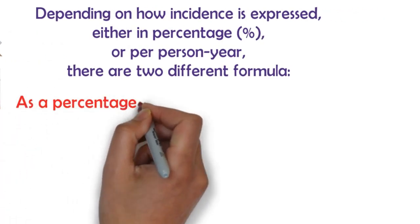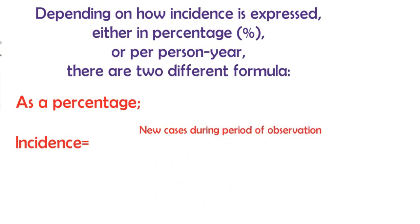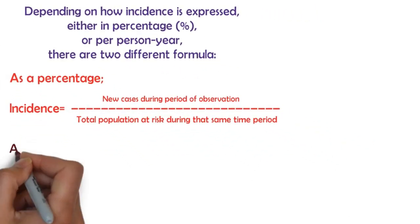To express incidence as a percentage: Incidence equals new cases during period of observation divided by total population at risk during the same time period.